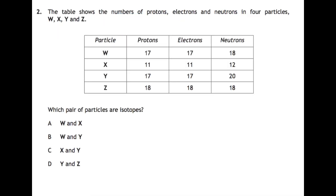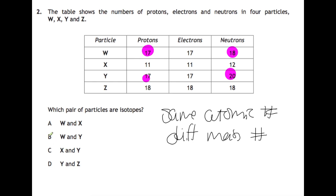Question two: the table shows the number of protons, electrons and neutrons in four particles W, X, Y and Z. Which pair of particles are isotopes? An isotope is something which has the same atomic number but different mass numbers. So they have the same number of protons but different numbers of neutrons. In this table, the only ones that have the same number of protons are W and Y, and their neutrons are different. So our answer for this is B.